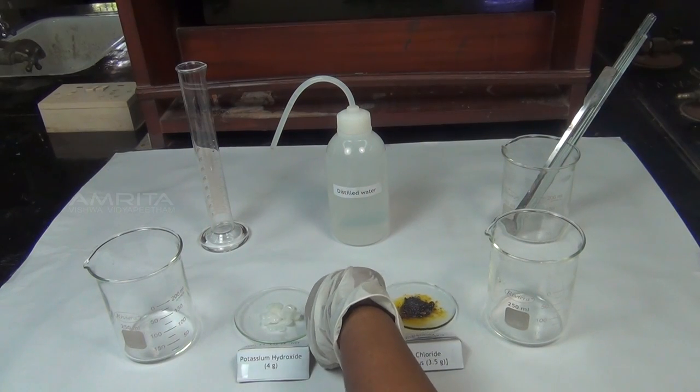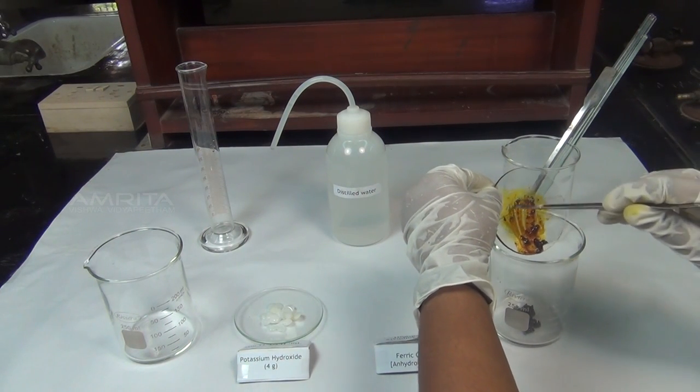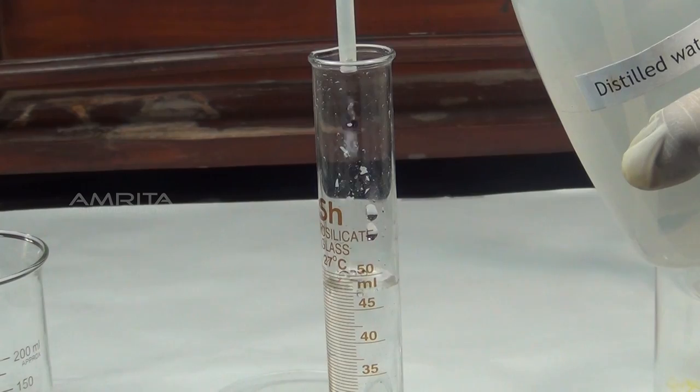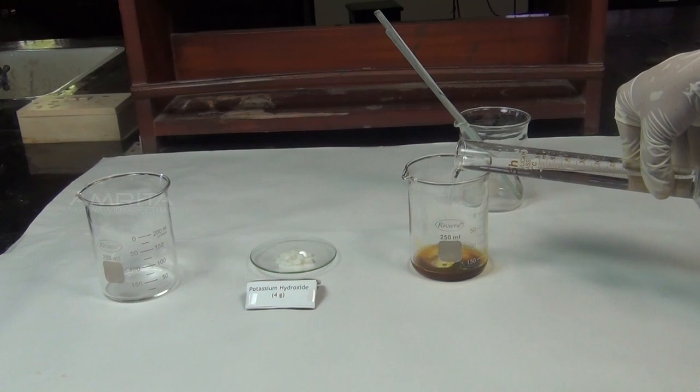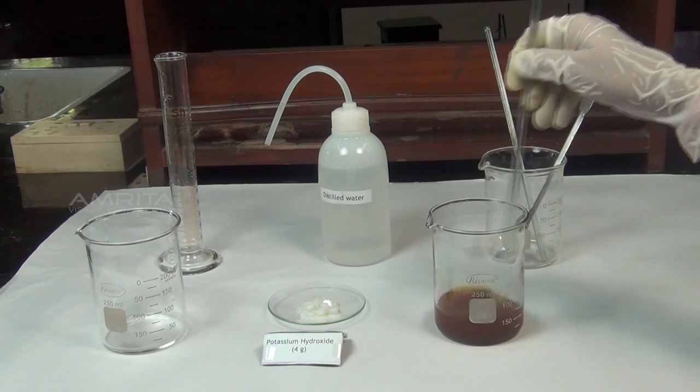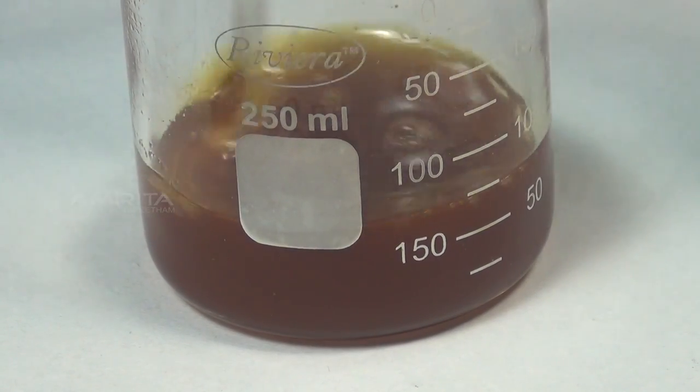Procedure: Take about 3.5 g anhydrous ferric chloride in a 250 ml beaker. To this add about 50 ml distilled water using a measuring jar. Stir the solution using a glass rod to dissolve ferric chloride.